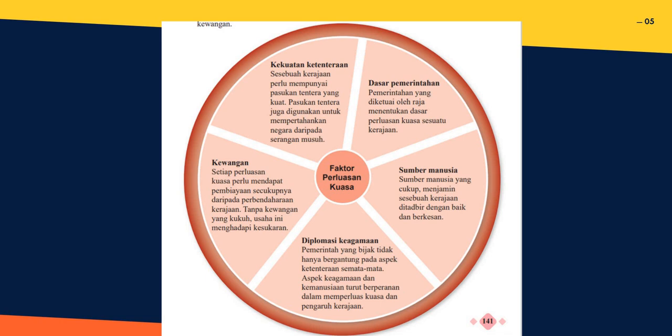Kenapa kerajaan-kerajaan ataupun raja-raja ni nak meluaskan kuasa? Kita tengok faktor peluasan kuasa satu persatu. Pertama, kekuatan tentera - sesebuah kerajaan perlu mempunyai pasukan tentera yang kuat. Pasukan tentera juga digunakan untuk mempertahankan negara daripada serangan musuh. Kedua, dasar pemerintahan - pemerintahan yang dikuasai oleh raja menentukan dasar peluasan kuasa sesuatu kerajaan.